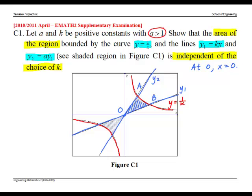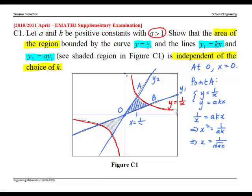Next, we find point A. Point A is the intersection point of Y equals 1 over X and Y2. Y2 is A times Y1, which is AKX. Solving, we have 1 over X equals AKX. Therefore, X equals 1 over square root AK, since we only take the positive answer. So at A, X equals 1 over square root AK.